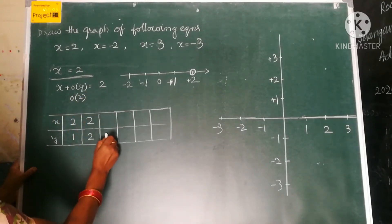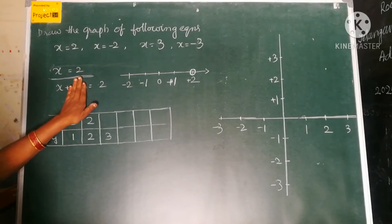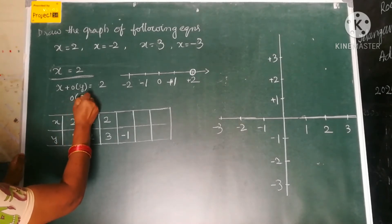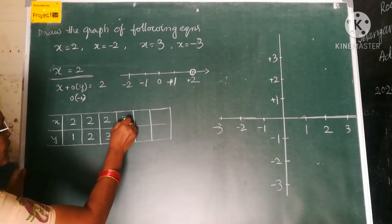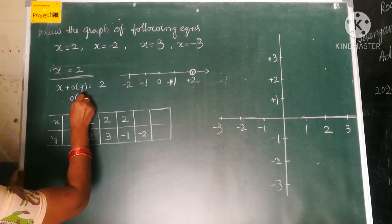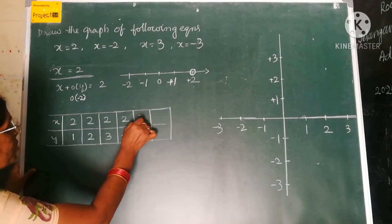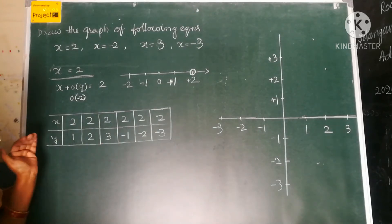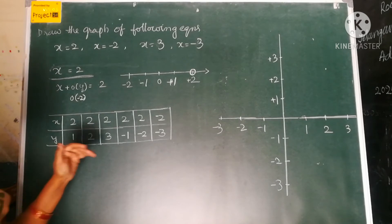Let us take one more value: y equal to 3. If I put 3, this is again 0 into 3, so the value becomes 0, and x is equal to 2. Now we put minus values. For y equal to minus 1, 0 multiplied by minus 1 gives 0, so x is equal to 2. For y equal to minus 2, 0 multiplied by minus 2 is 0, so x is equal to 2. If you observe all these, you are getting the same value for x when you give different values for y.